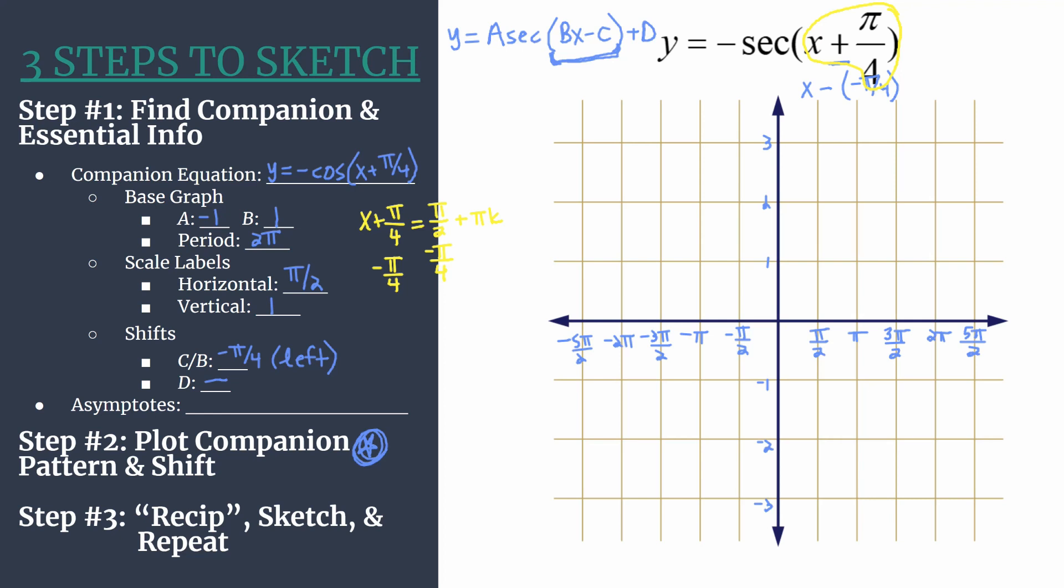And we'll write our final equation here in our asymptotes blank. So pi over 2 minus pi over 4 is going to be pi over 4 plus pi k. And in case you aren't familiar with that k term, k is just an integer. And depending on which integer you substitute in, you'll get a different asymptote for your particular equation. And that's why I like to do this here.